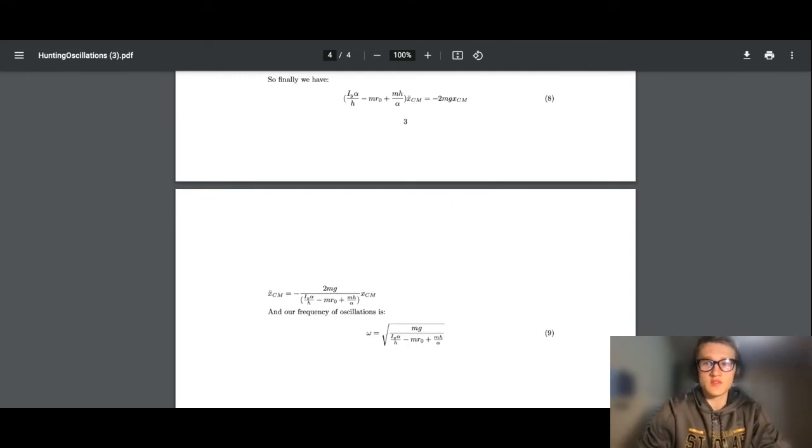Since alpha will be very small for a realistic train wheel set, it is easy to see that the term in front of x double prime is positive. Thus, like many systems we have encountered in classical mechanics, this equation of motion resembles the equation for a simple harmonic oscillator. This allows us to conclude that the train wheel system is stable under lateral disturbances. Rearranging this equation, we can see that the frequency of oscillations of this system is given by equation 9.